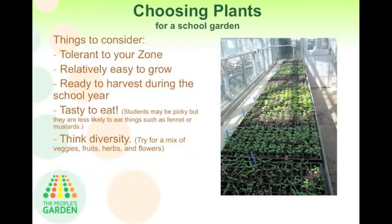Then you want to think about the kinds of things that are relatively easy to grow. Most annual plants that are commonly eaten by many of us are pretty easy to grow from seed. Some of the things that tend to be a little harder are broccoli and cauliflower. Corn is another one — it often requires a lot more space than our school gardens have to properly pollinate, so it's not always one of those plants that you actually get a great harvest from.